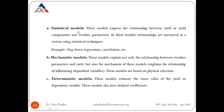The first type is the statistical model. This model expresses the relationship between yield or yield components and weather parameters. The relationship is established using statistical techniques such as stepwise regression and correlation, where mathematical relationships are used to calculate components like yield and weather parameters.